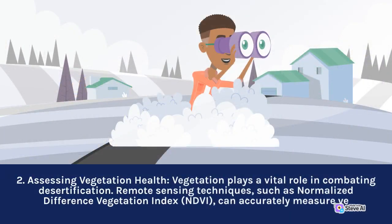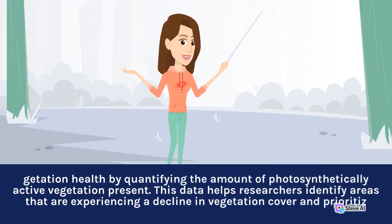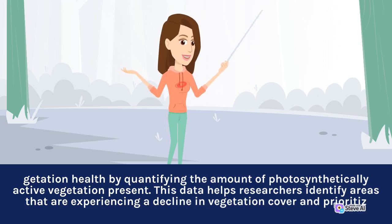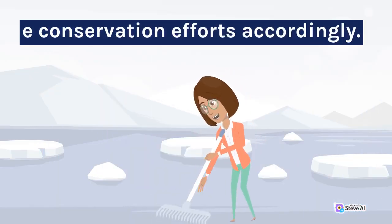2. Assessing Vegetation Health: Vegetation plays a vital role in combating desertification. Remote sensing techniques, such as the Normalized Difference Vegetation Index (NDVI), can accurately measure vegetation health by quantifying the amount of photosynthetically active vegetation present. This data helps researchers identify areas that are experiencing a decline in vegetation cover and prioritize conservation efforts accordingly.